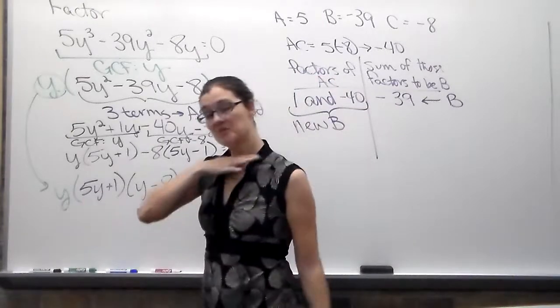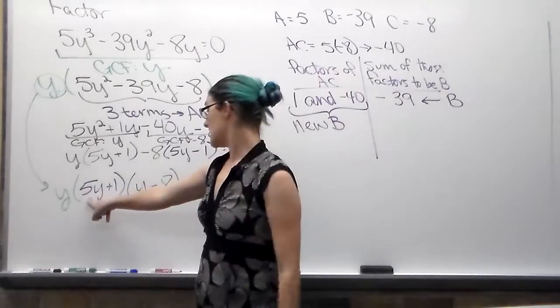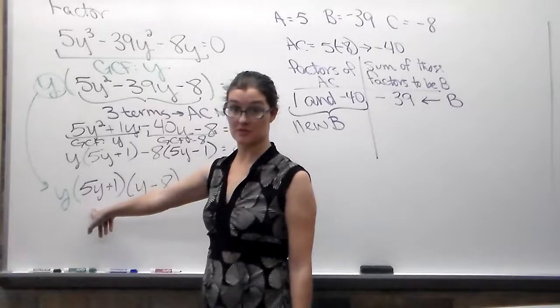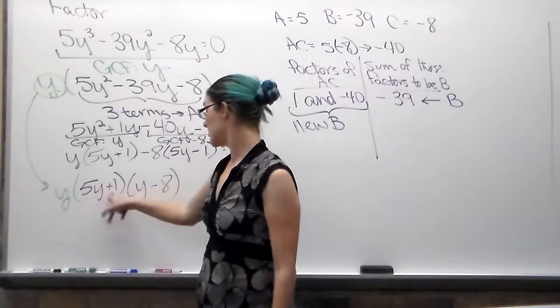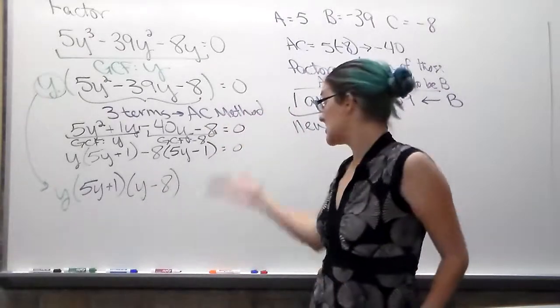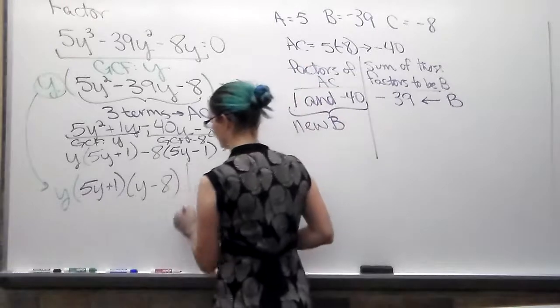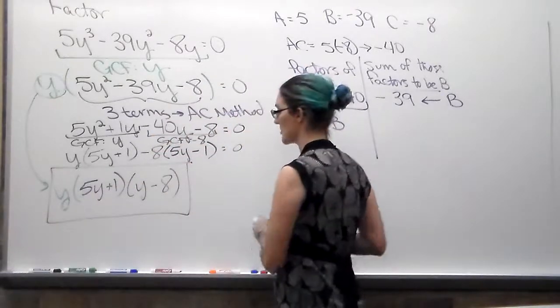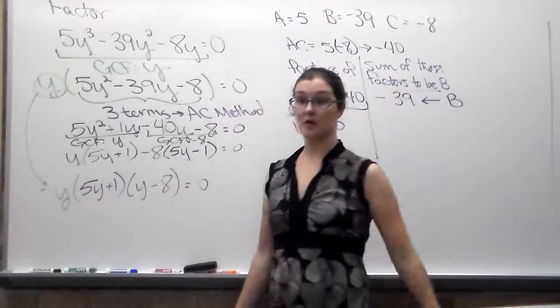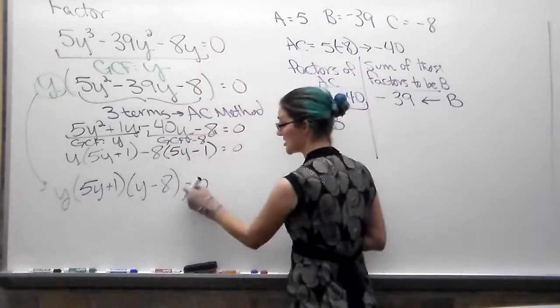And then always, any time you do any step of factoring, 5y plus 1, can that be factored more? It's only two terms. So that means it's either GCF or sum or difference of squares or sum or difference of cubes. So no squares, no cubes, 5 and 1, no GCF, no letters in common. Y minus 8, two terms again. Means it's one of your formulas. There's no squares, no cubes. There's no GCF. That's as far as it can go. Oh, equals 0. I forgot the equals 0. I'm sorry. It is equal to 0. I am just joking with my classes, we are not God. Therefore, we cannot create nor destroy an equal sign. So if there's an equal sign in our original question, it has to be in our answer.